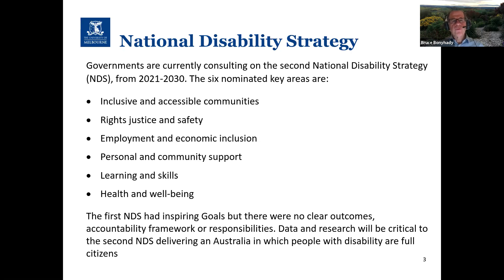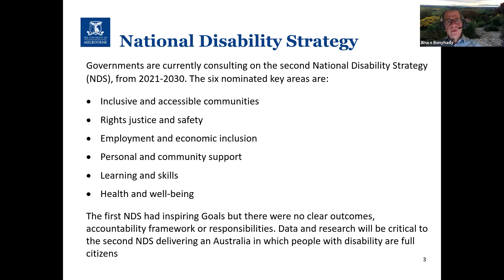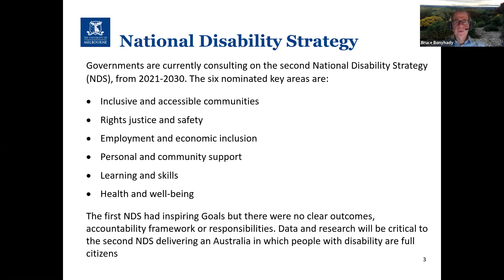The third element is employment and economic inclusion — making sure that people with disability have the same opportunities for work and volunteering as everyone else. The fourth element is personal and community support. Some of that is provided by the NDIS, but there are only about half a million people eligible for the NDIS compared with nearly five million people living with disability. This ensures that those not eligible for the NDIS also have supports to help them be part of the community, and that all people with disability have access to mainstream services like health, education, and housing.